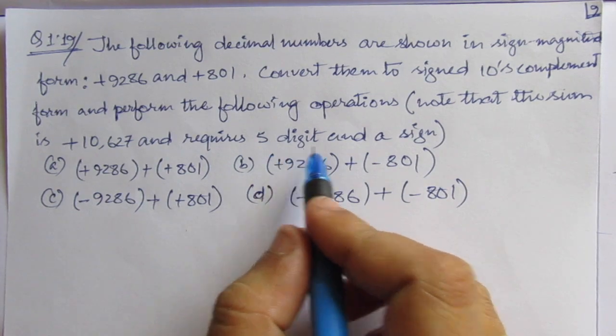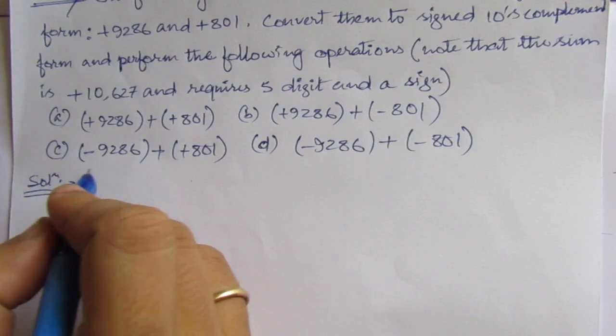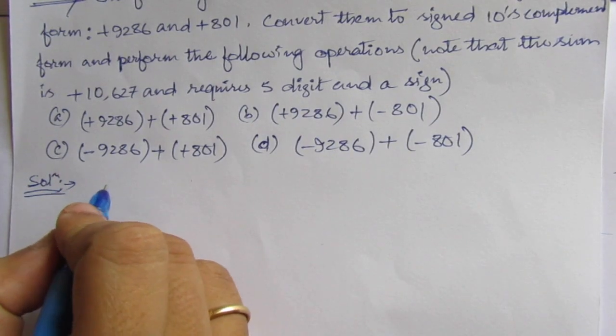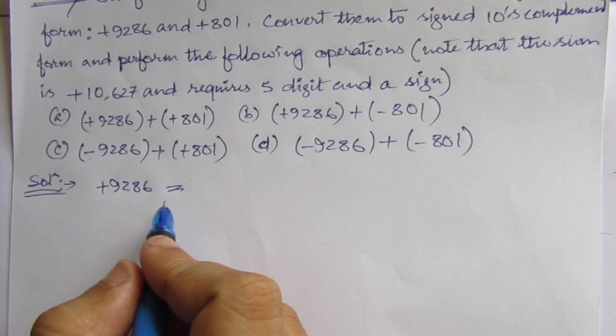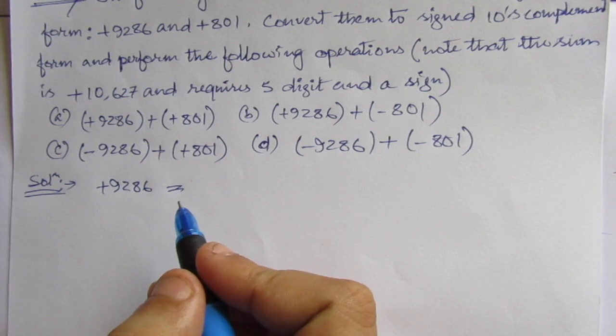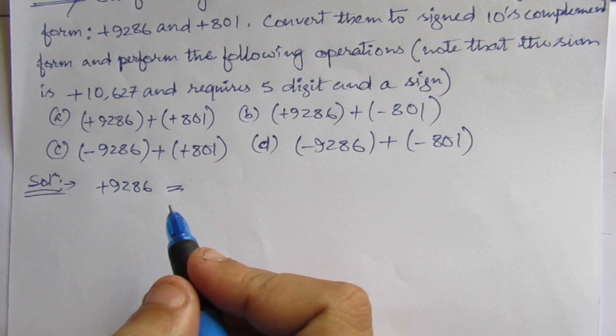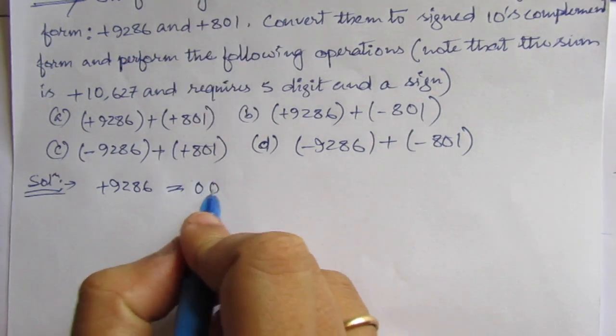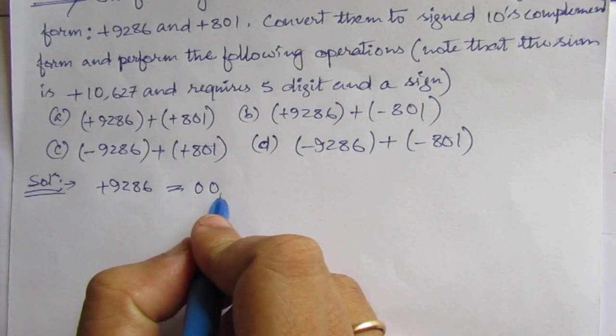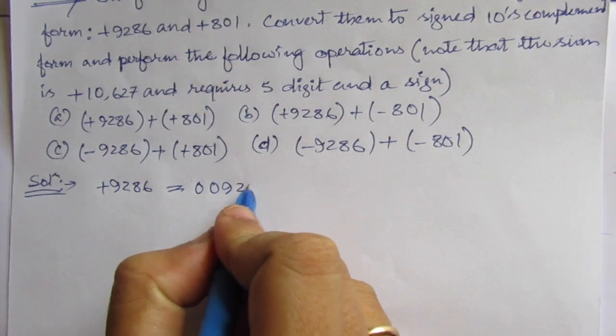Note that the sum is 10,627. That means we need 5 magnitude bits and 1 extra digit for the sign, which require 5 digits and a sign. We have number 9286. So, plus 9286. We have to represent this number using 6 digits, out of which 5 digits will be used for the magnitude and 1 digit will be used for the sign. 0, 0. This one is for the sign. And 0, 9, 2, 8, 6.